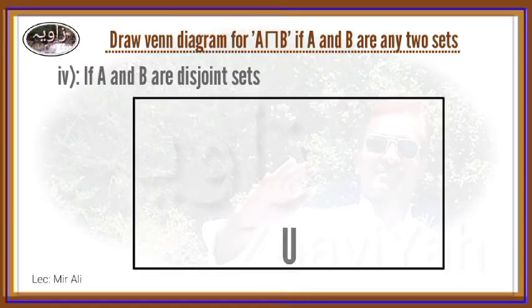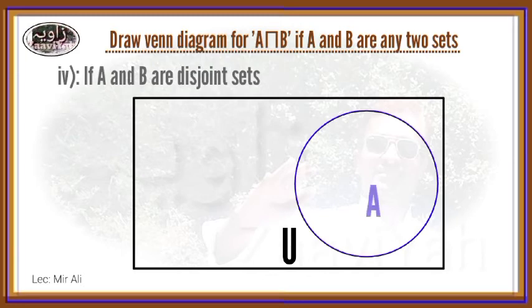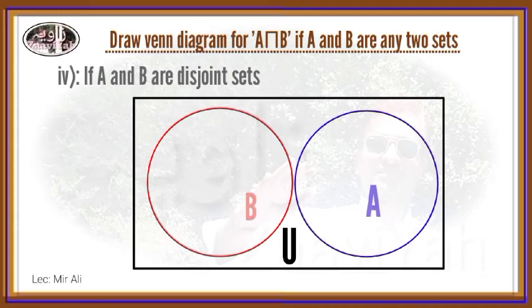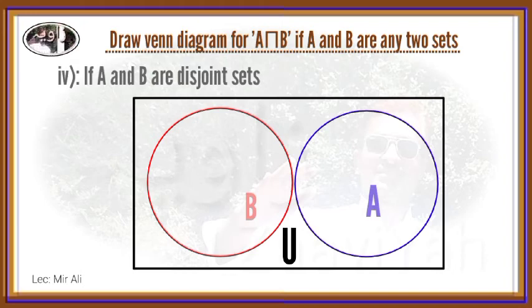There is one universal set U, and set A is drawn. Since set B is different from set A and they have no common elements, set B is drawn separately — disjoint. For A-Intersection-B, when A and B are disjoint, no common elements exist, so the intersection is an empty set.